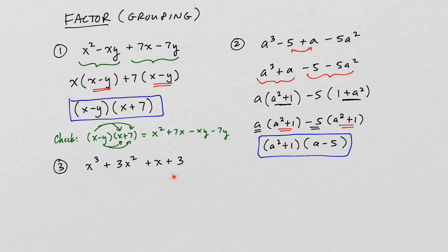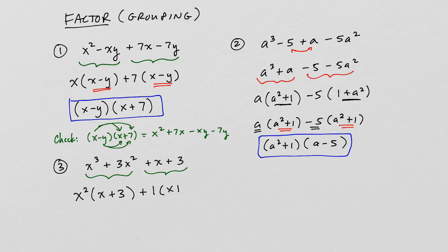For the final example, again there is no common factor among all four terms. Grouping the first two terms and the last two terms: from the first group, we factor out x squared, leaving x plus 3. From the second group, x and 3 have nothing in common, so we factor out 1, since 1 times x plus 3 is still x plus 3. Writing this makes it clear that x plus 3 is a common factor, which we then factor out, leaving x squared plus 1. Our final answer is x plus 3 times the quantity x squared plus 1.